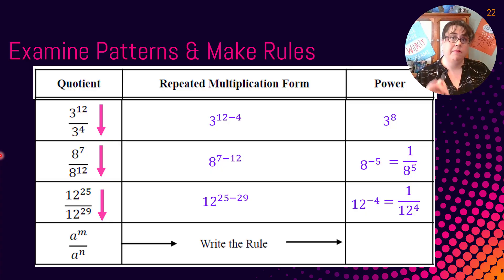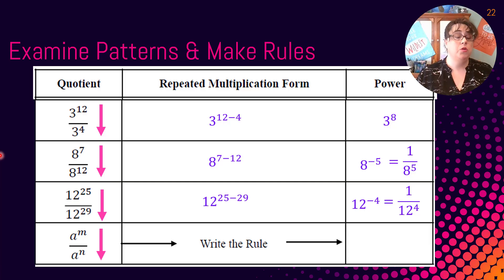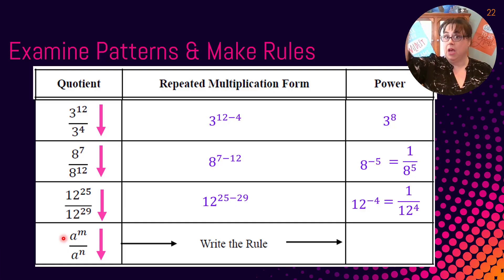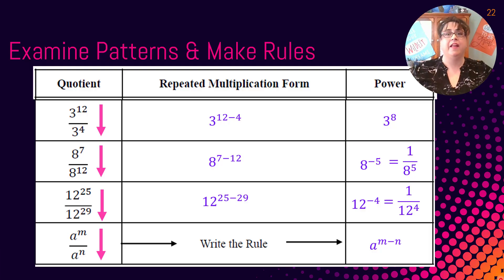Pause and take a shot at writing the rule yourself, then come back. If you looked at what we've been doing, you first have to make sure the bases are the same. Then you rewrite the base and subtract the exponents from top to bottom: A to the M divided by A to the N equals A to the M minus N. Great job — you took a pattern, recognized it, and wrote a rule. Rules let us take shortcuts.